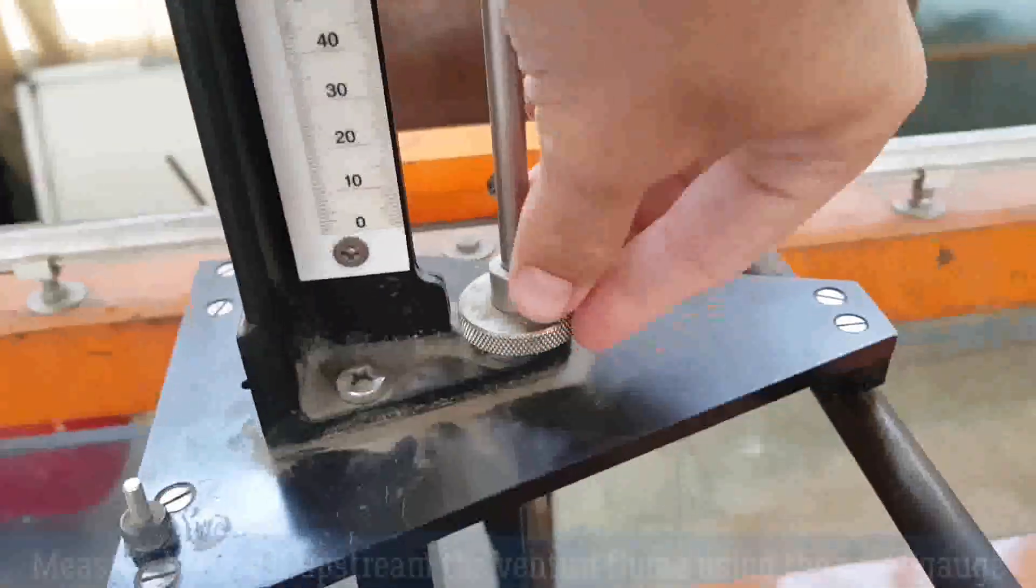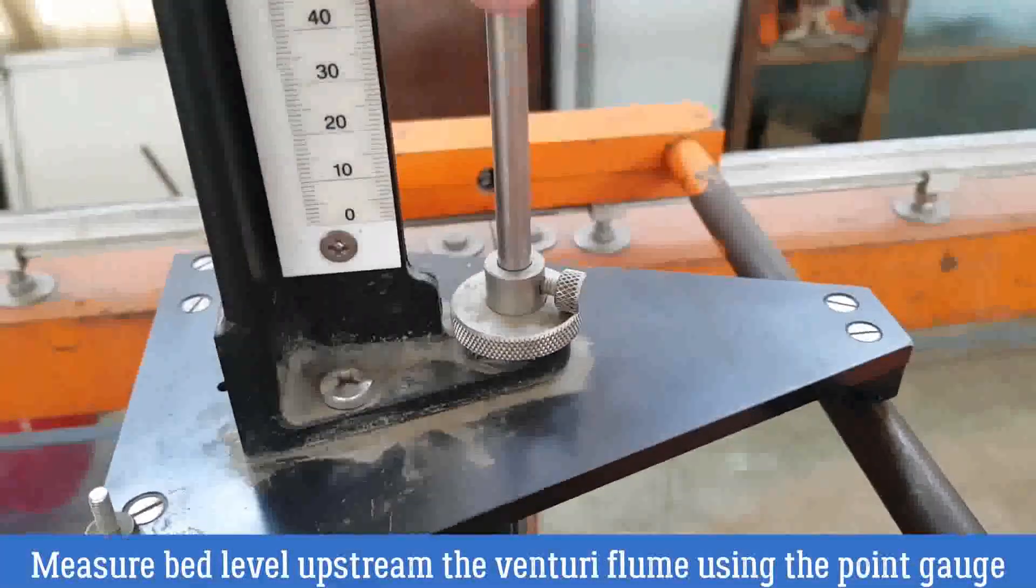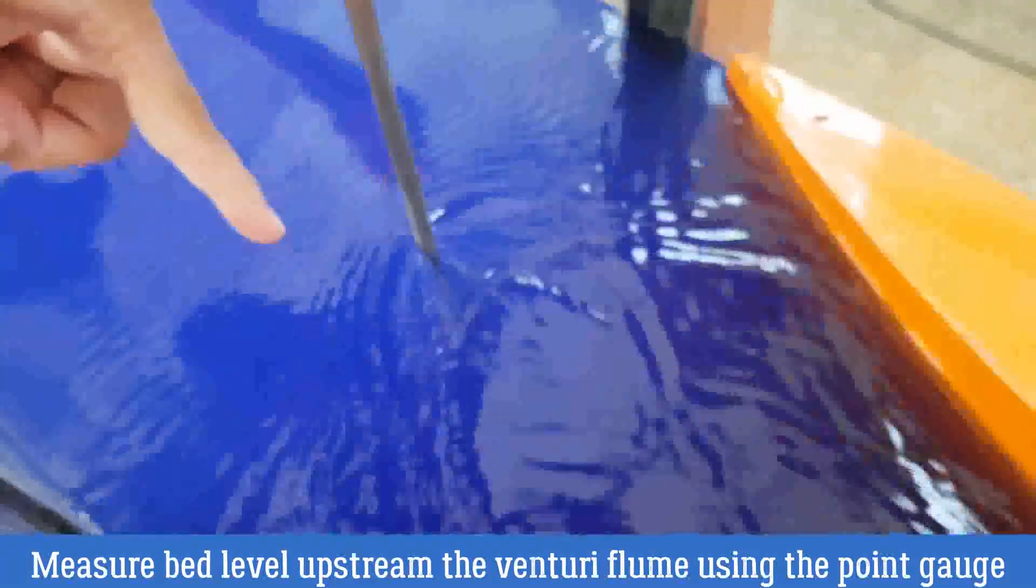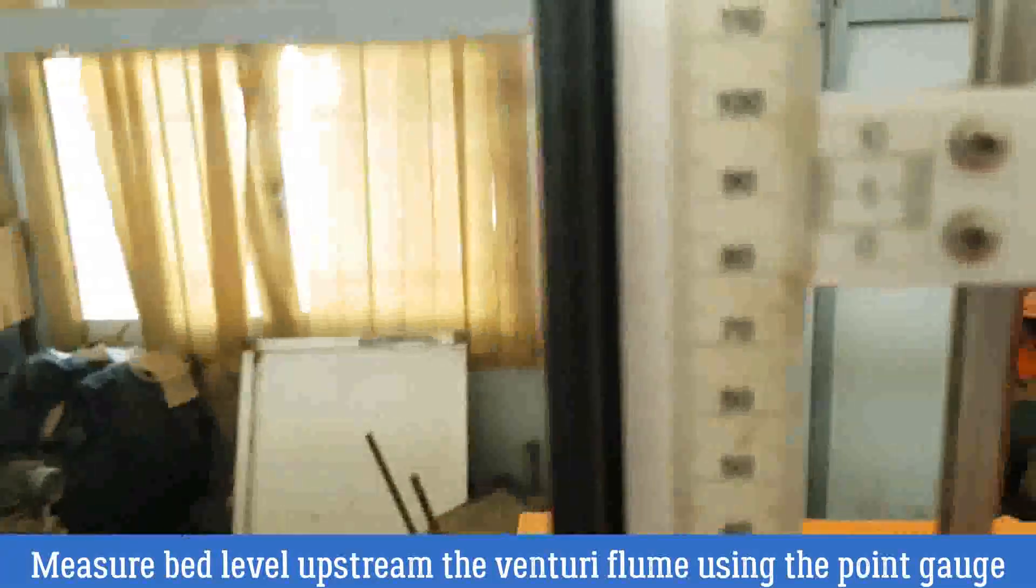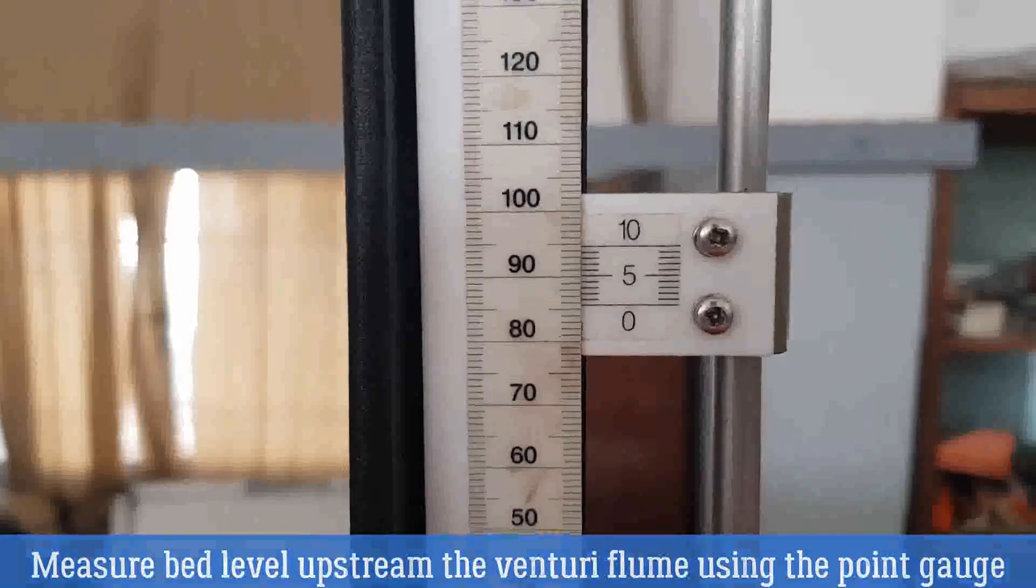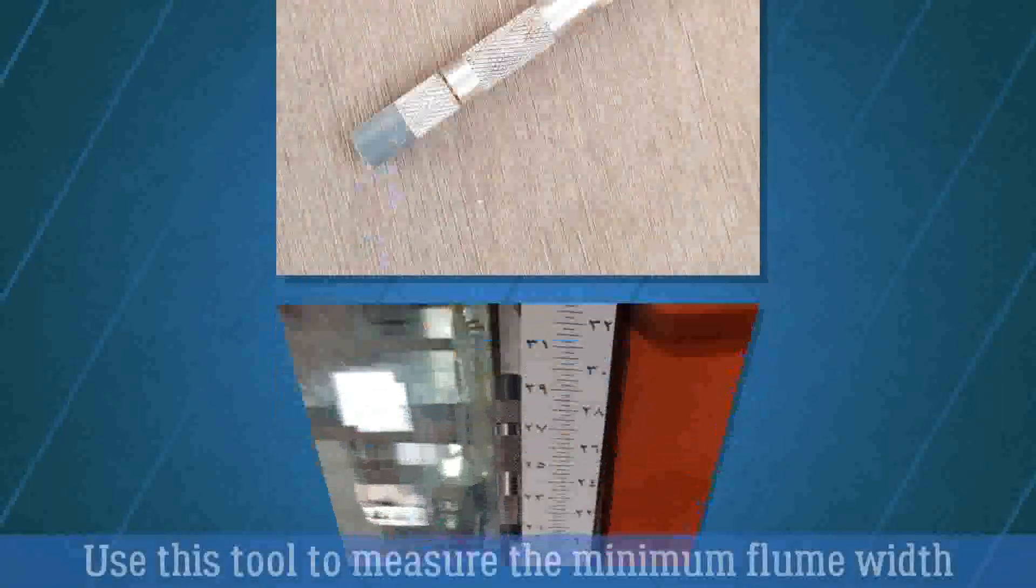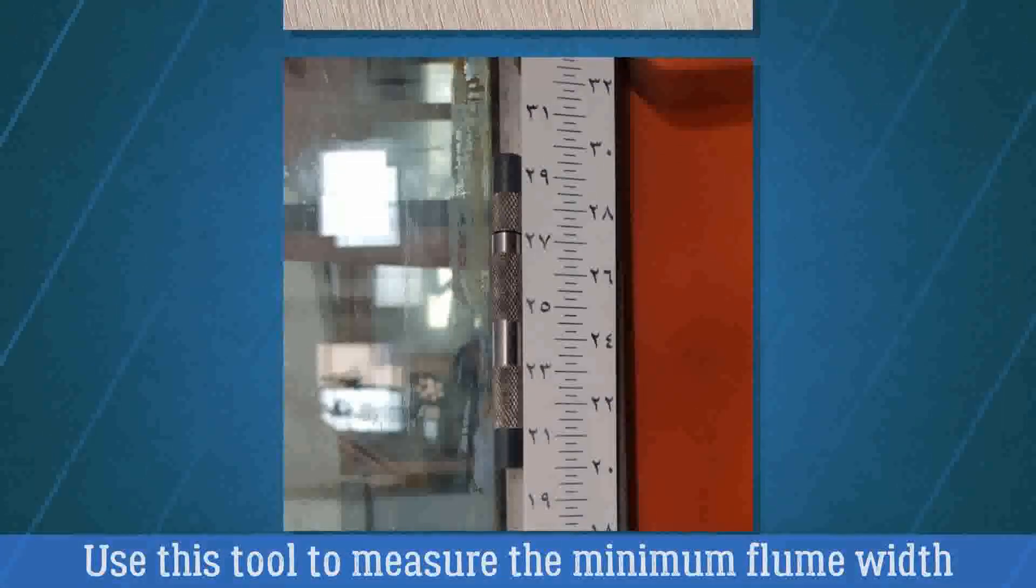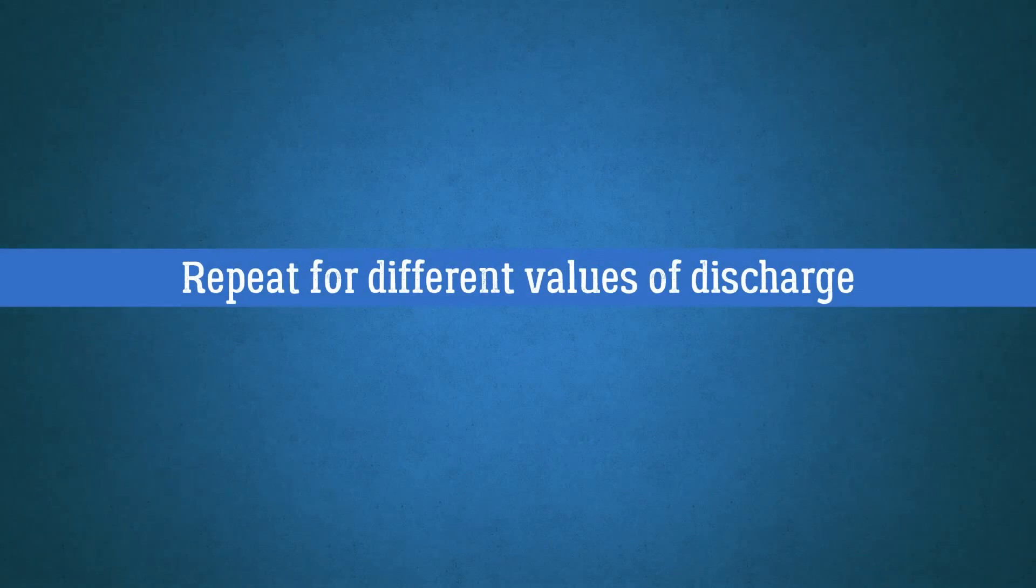We are going to lower the point gauge to reach the flume bed and we will measure the bed level just upstream the venturi flume. We are going to use this tool to measure the minimum width of the flume which is 10 centimeters. And then repeat for a different value of discharge.